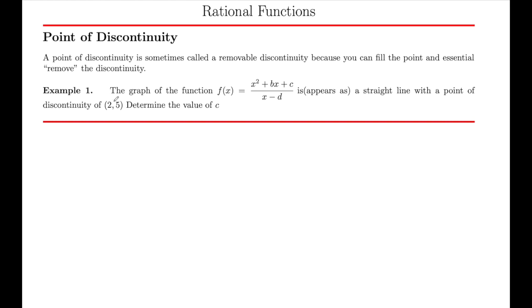Let's take a look at example one. This is not an easy example, but it illustrates the concept of a point of discontinuity. We have a graph of a function f(x), and it equals this rational function x squared plus bx plus c in the numerator and x minus d in the denominator. It appears as a straight line with a point of discontinuity of (2, 5). This is an ordered pair, so this is an x value and this is a y value. We need to determine the value of c.